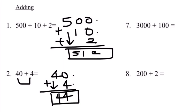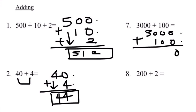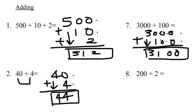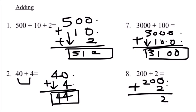Number seven, 3000 plus 100. Aligning the numbers vertically: 0 plus 0 equals 0, 0 plus 0 equals 0, 0 plus 1 equals 1, we bring down the 3. Therefore our final answer for 3,000 plus 100 equals 3,100. Number eight, 200 plus 2. Align the numbers vertically. 0 plus 2 equals 2, bring down the 0, bring down the 2. Our final answer is 202. 200 plus 2 equals 202.